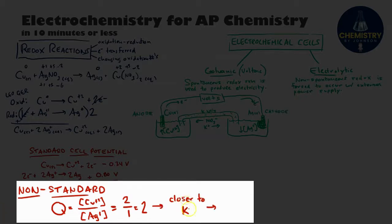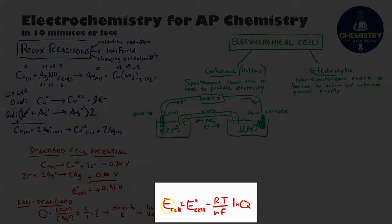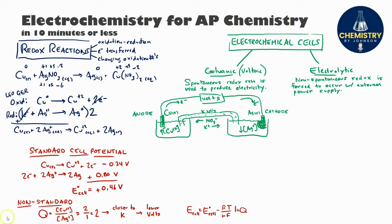Since I know the K value is very large, a Q value of 2 means that these conditions are closer to equilibrium. Since at equilibrium the voltage would drop to zero, I know that I will have a lower voltage than what I calculated under standard conditions. You could also solve for the exact value of that non-standard cell potential by plugging in that value for Q and the original voltage into the Nernst equation shown here.